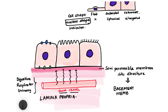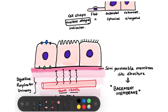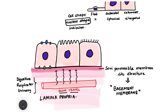The basement membrane is an important feature of epithelial tissues and will be discussed in detail in subsequent videos. It provides a platform for the arrangement of epithelial cells and marks the boundary between epithelial tissue and the underlying connective tissue. Based on the presence of the basement membrane, we can define the polarity of epithelial cells.